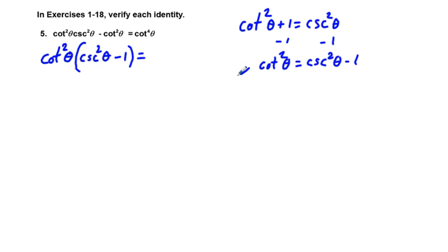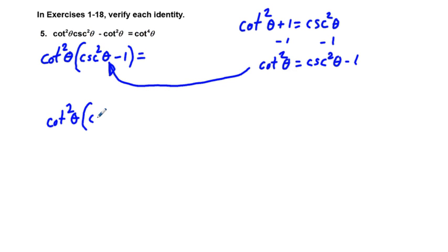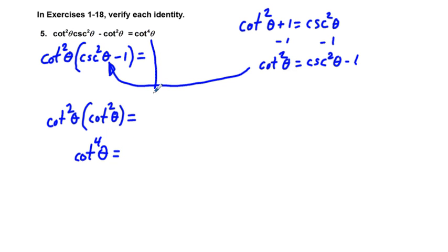So we can replace cosecant squared theta minus 1 with cotangent squared theta. Now we have cotangent squared theta times cotangent squared theta, which is cotangent to the fourth power theta — and that equals what we bring down from the right side: cotangent to the fourth power theta. Check.